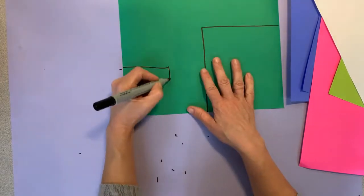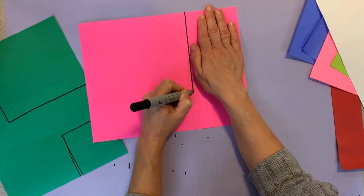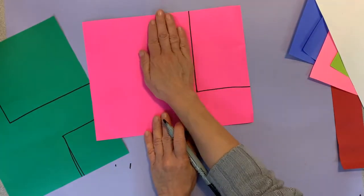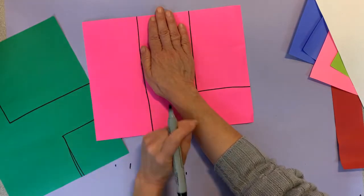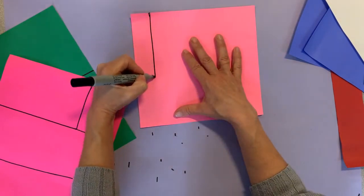I have all kinds of different papers - greens, pink ones - and we're going to use some geometric shapes. I'm going to use rectangles, squares, and triangles.